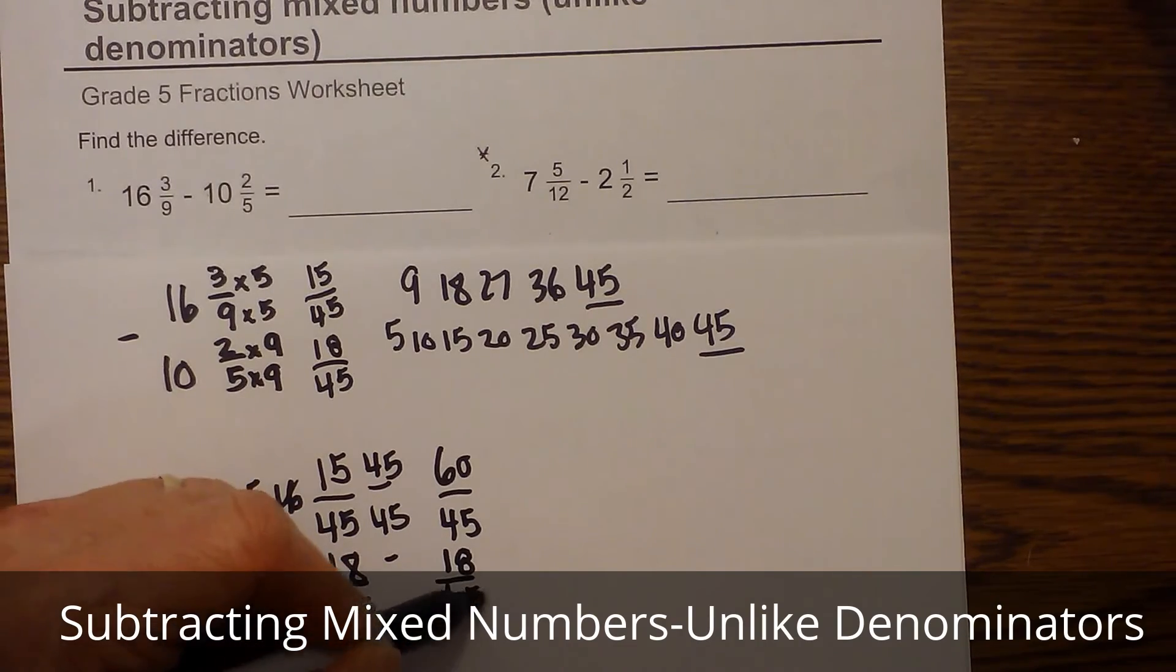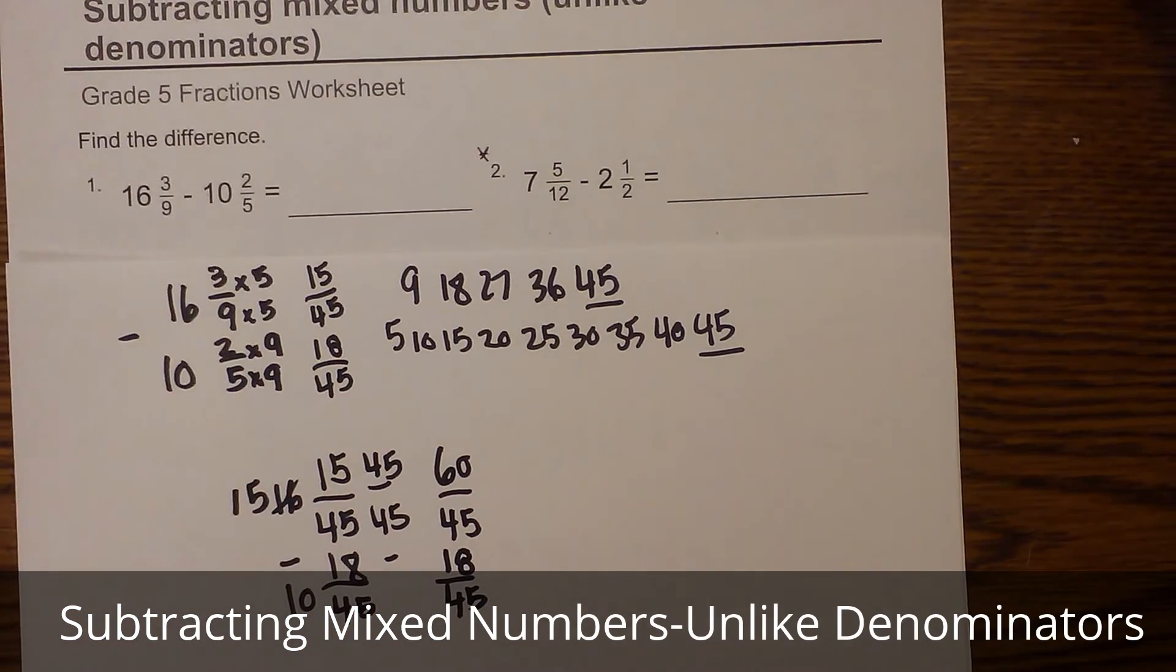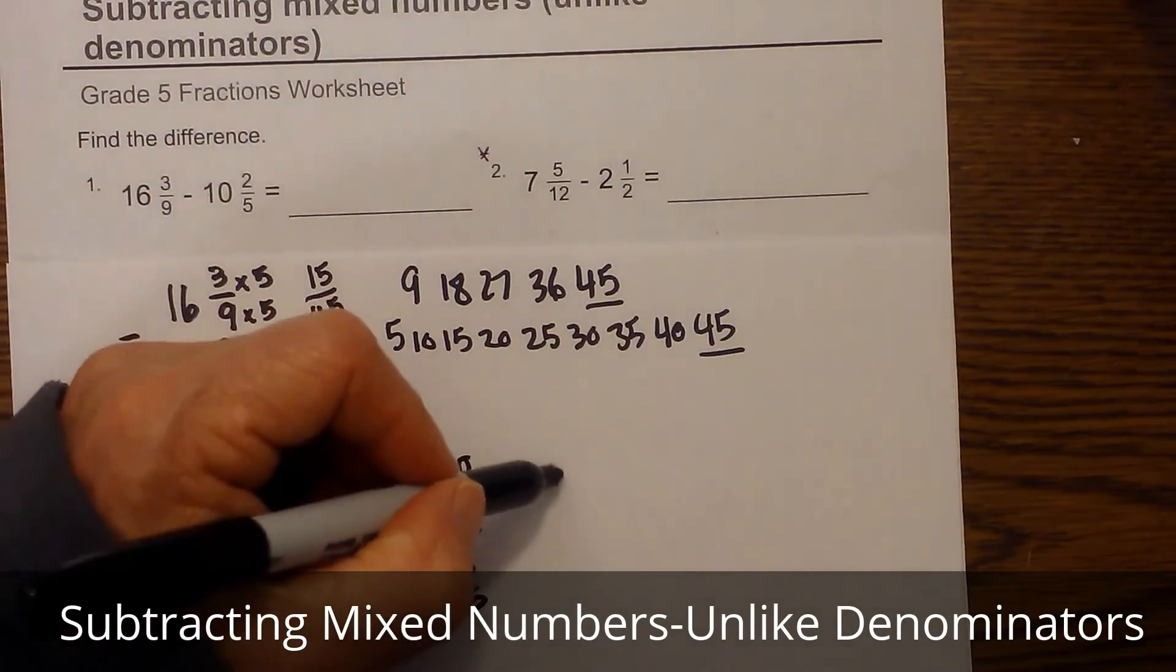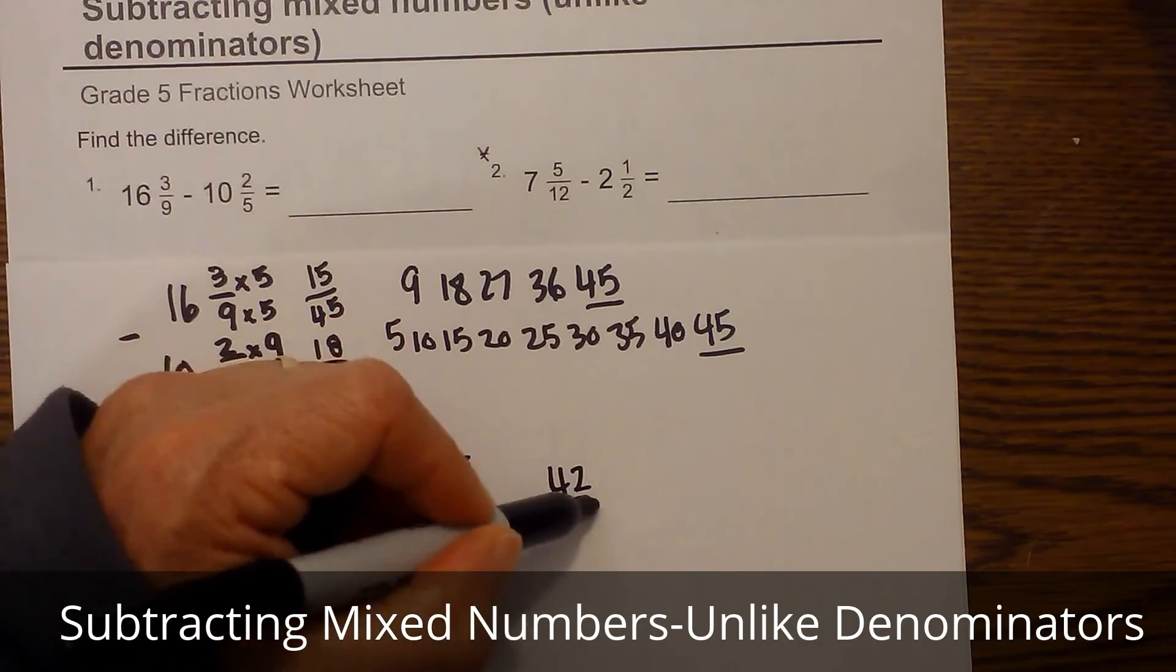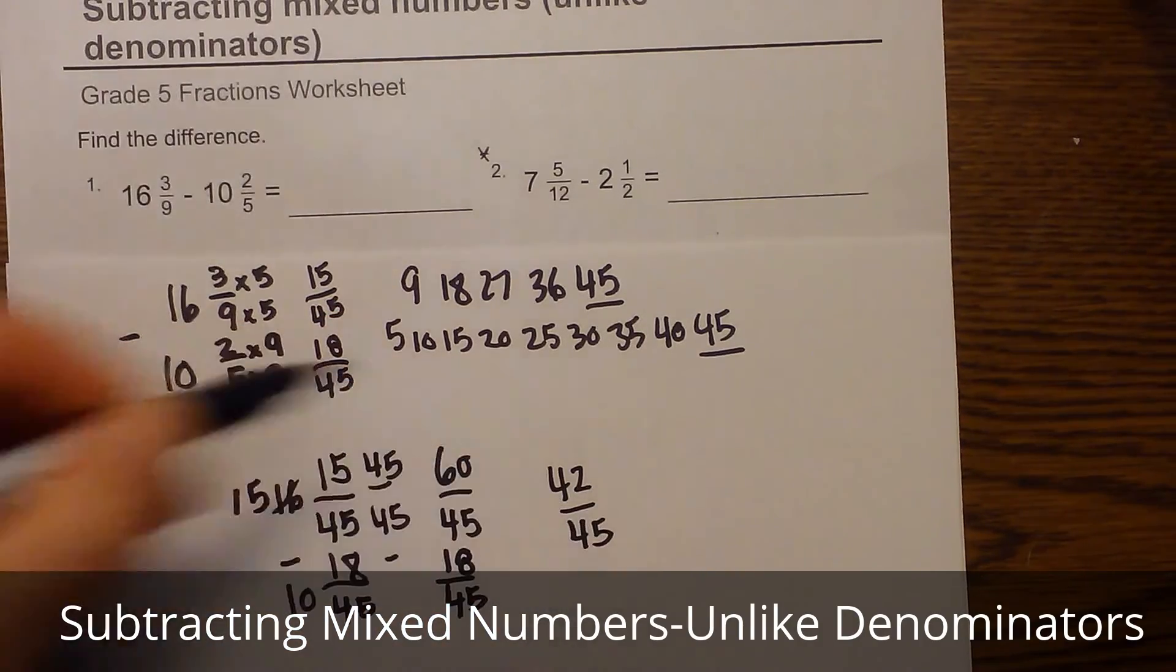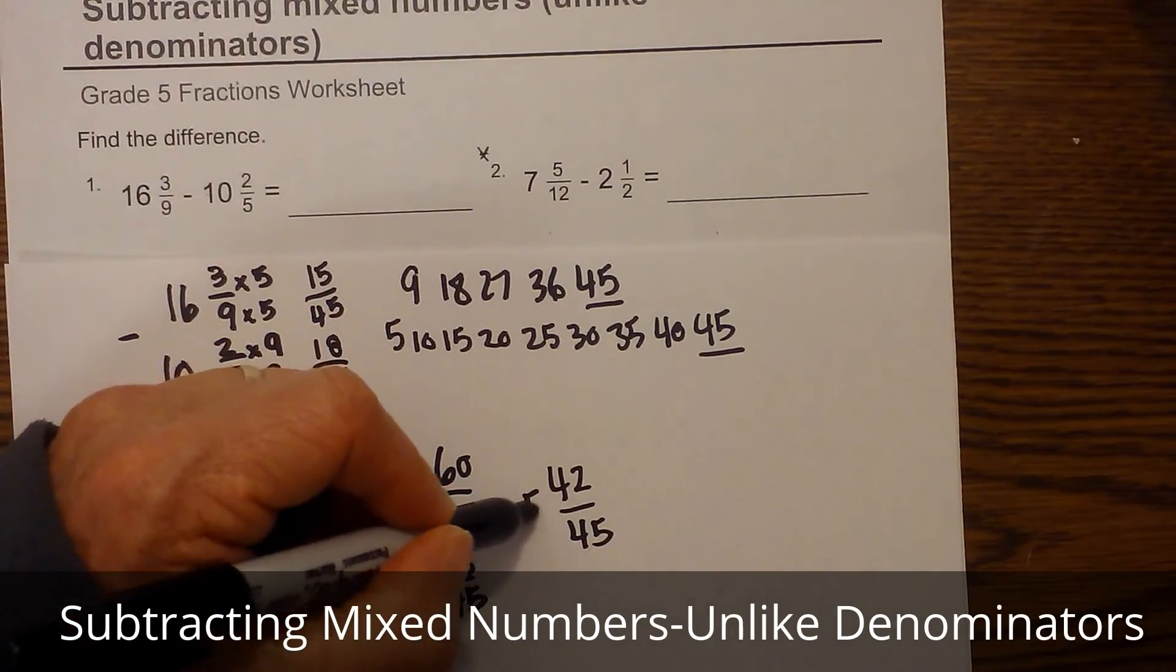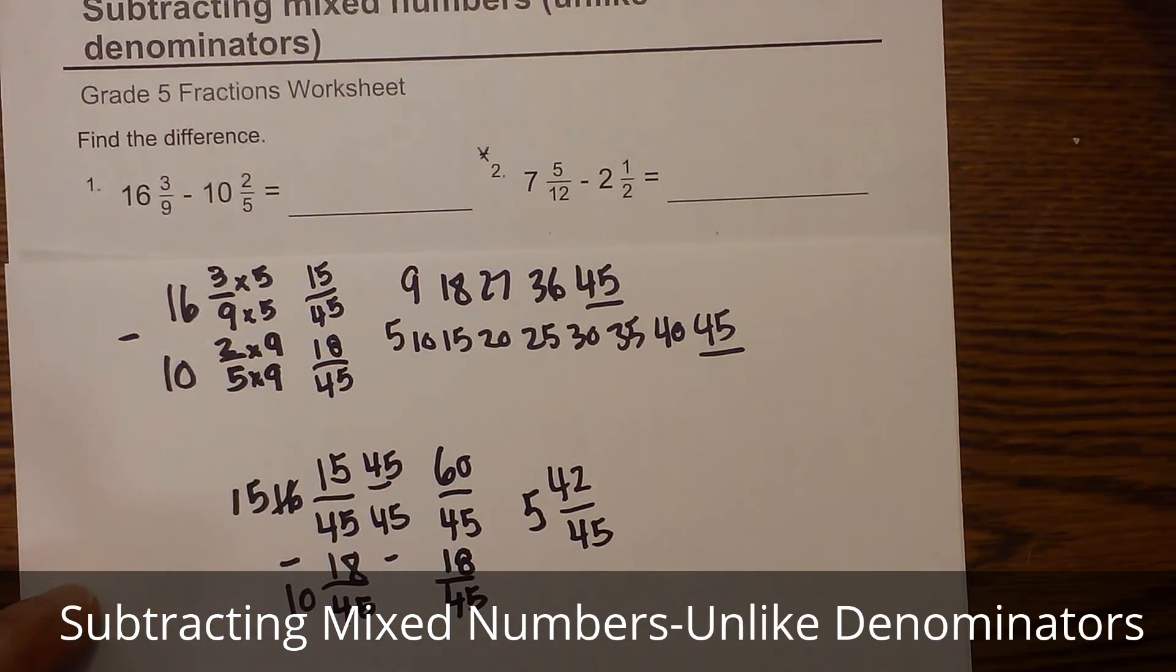Now I just merely go: sixty minus eighteen is forty-two over forty-five, and fifteen minus ten is five. Now can I do anything with forty-two and forty-five?